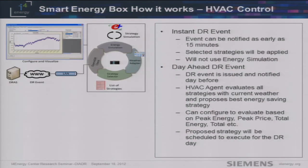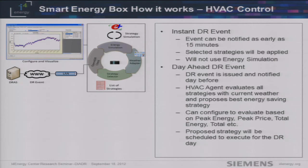If you have an instant DR event, we can start shedding as early as 15 minutes. During an instant event with only 15 minutes available, it's not going to evaluate energy strategies because there isn't enough time for HVAC analysis. In the case of a day-ahead DR event, it can evaluate all strategies and select the best one — configured to evaluate based on peak energy, peak load, or peak price, depending on the settings.